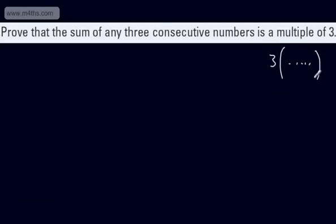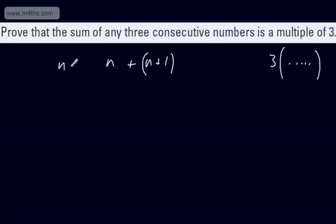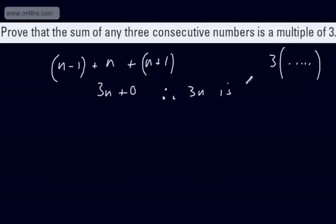Prove that the sum of any 3 consecutive numbers is a multiple of 3. When we're looking for multiples, as long as we can factor a 3 out — so we can have 3 times something in brackets — we can say it's a multiple of 3. My preferred choice is to write the three consecutive numbers as N minus 1, N, and N plus 1. Adding them: 3N, and then the minus 1 and plus 1 cancel. So what we can state is 3N is a multiple of 3 — quite clearly.